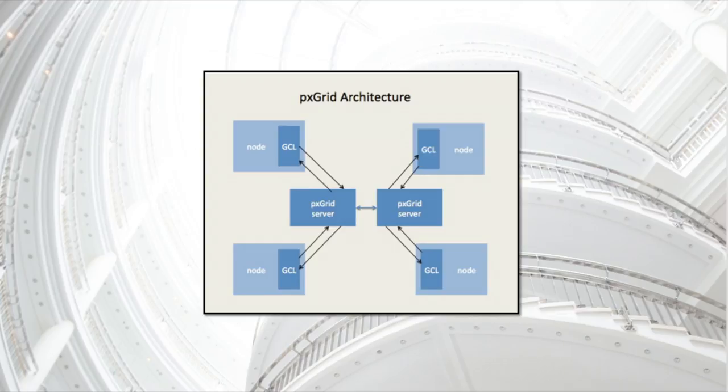When a node connects to PxGrid, it authenticates with the PxGrid server and establishes its role as either a provider, subscriber, or both. Because all nodes must authenticate and be approved by the network administrator, we can ensure a certain level of trust and security on the grid. The administrator can remove clients from the grid at any time.